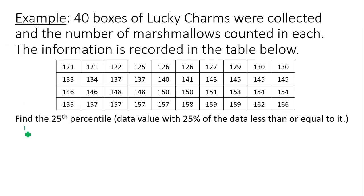So I'm going to take 40 and multiply by 25% or 0.25, which gives me a whole number, 10. What I'm finding here is my locator.